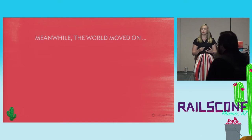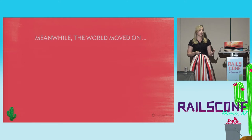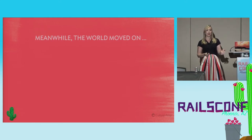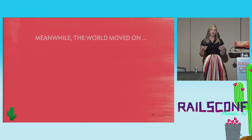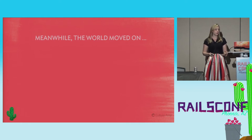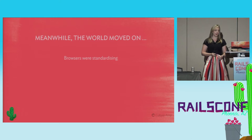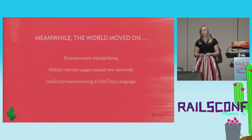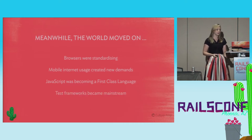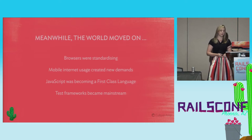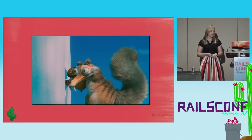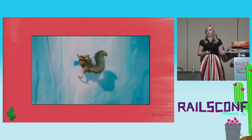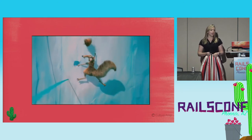Meanwhile the JavaScript world was moving on. One of the early benefits of jQuery was standardizing across browsers, but as a result the library had become really bloated — and browsers were standardizing, so we didn't need that bloat anymore. Users were starting to use mobile, demanding faster downloads, so we had to build smaller JavaScript libraries. JavaScript started to really become a first-class language. We had to think about how we structured it, start adding tests — frameworks like Jasmine and QUnit were becoming mainstream. Meanwhile we were back in this world with all this spaghetti code where fixing one bug would cause another to pop up somewhere else.